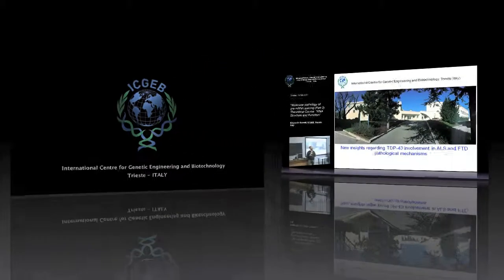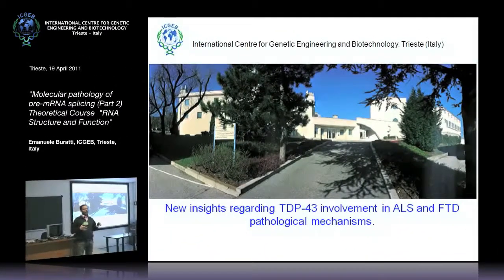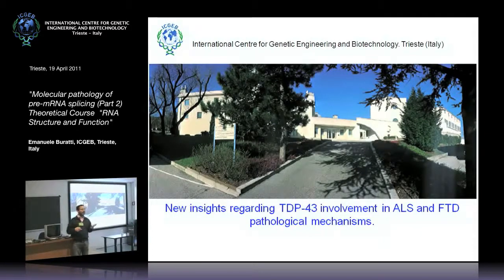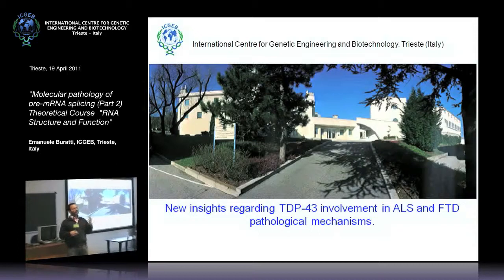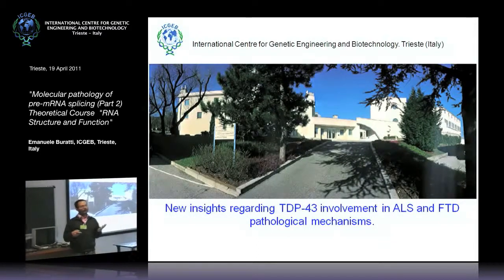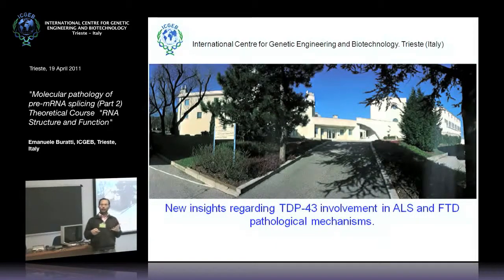What happens when a transacting factor is mutated? The mutations I showed in the first part of the talk affect only one gene. But if you have a splicing factor that is mutated in some way, then the number of splicing events affected are much greater than just a single gene. Proof of this has come from animal models.